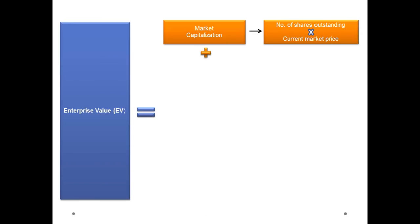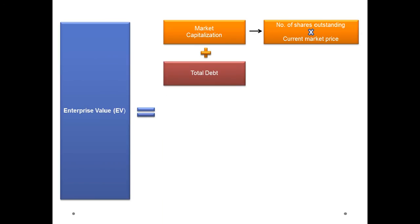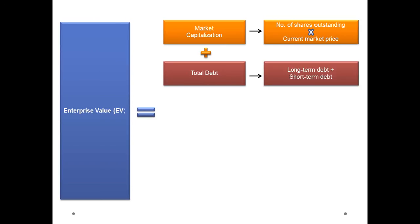The next component is total debt. Any interest-bearing liability is debt. Total debt includes long-term debt such as term loans, bonds, and debentures, as well as short-term debt such as short-term loans, overdraft, and cash credit facility.